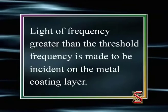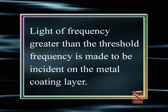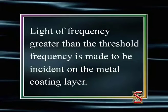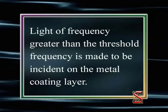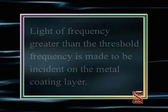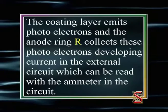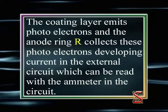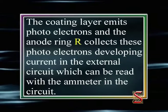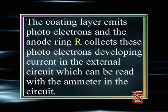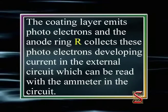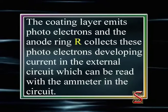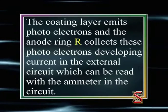Light of frequency greater than the threshold frequency is made to be incident on the metal coating layer. The coating layer emits photoelectrons and the anode ring R collects these photoelectrons, developing current in the external circuit, which can be read with the ammeter in the circuit.